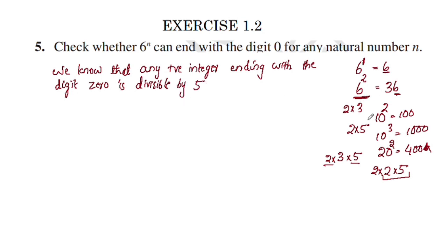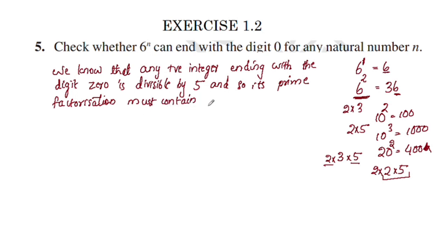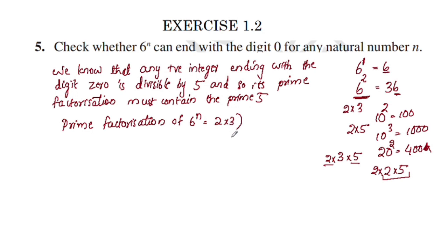For a number to end with digit 0, it must be divisible by 5. And so its prime factorization must contain the prime 5. The prime factorization of 6 raised to n is 2 into 3, the whole raised to n. By the fundamental theorem of arithmetic, there is no other prime factorization of 6 raised to n — it contains no other factor.